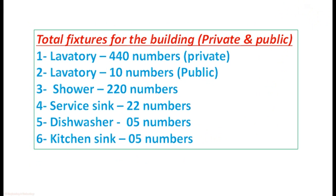The total fixtures for the building for which we need to calculate the hot water demand will be: lavatory or washbasin 440 numbers (private), washbasin for public 10 numbers, showers (private) 220 numbers, service sink 22 numbers, dishwasher 5 numbers, and kitchen sink 5 numbers.